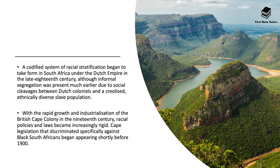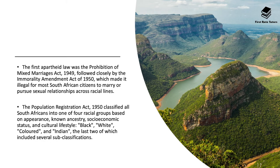Cape legislation that discriminated specifically against black South Africans began appearing shortly before 1900. The first apartheid law was the Prohibition of Mixed Marriages Act in 1949, followed closely by the Immorality Amendment Act of 1950, which made it illegal for most South African citizens to marry or pursue sexual relationships across racial lines. The Population Registration Act in 1950 classified all South Africans into one of four racial groups based on appearance, ancestry, socioeconomic status, and cultural lifestyle — those being black, white, coloured, and Indian categories, the last two of which included several racial sub-classifications.